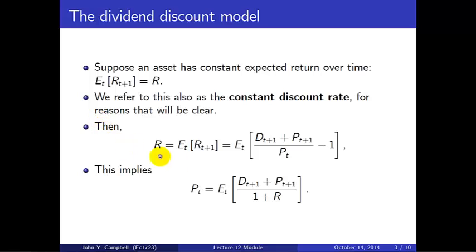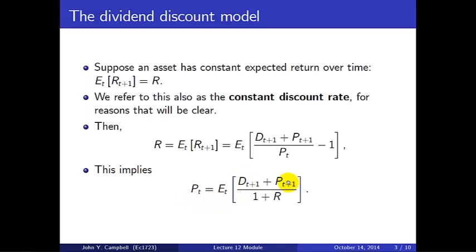R is the expected return. Now what is the return? It's the dividend tomorrow plus price tomorrow divided by price today, minus 1 — this is a net return, not a gross return. If we rearrange this equation, it tells us that the price today is the expectation today of dividend plus price tomorrow, divided by 1 plus R — that is, discounted by one period using the discount factor 1 over 1 plus R.